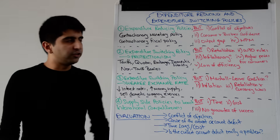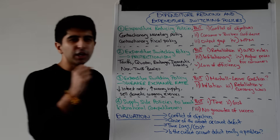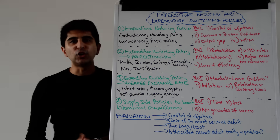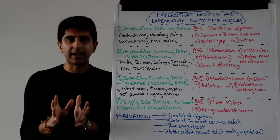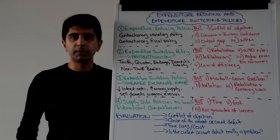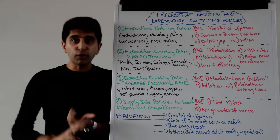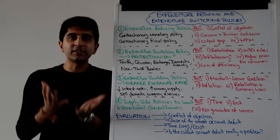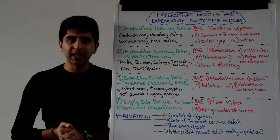All well and good for the intentions stated. But on the other hand, you've got to consider that there is a big conflict of objectives here. By reducing aggregate demand, you might close your current account deficit and improve your trade performance. But there are other more important macroeconomic objectives for the government to hit. By reducing aggregate demand, growth is going to reduce, unemployment is going to increase — you might well cause a recession in the economy.